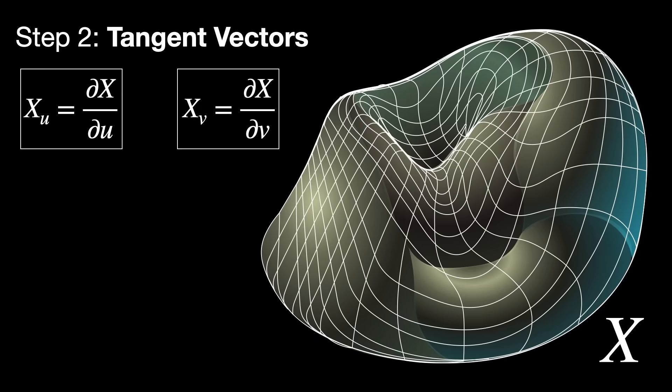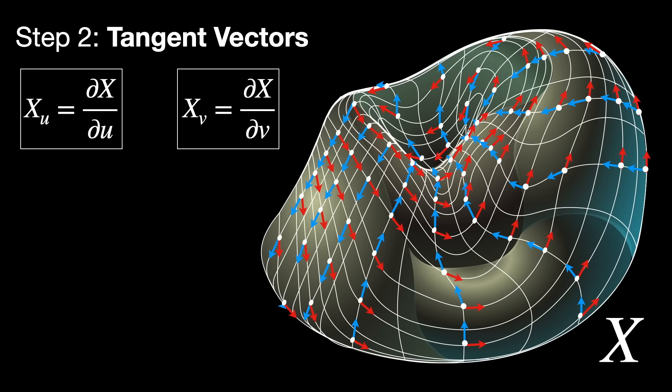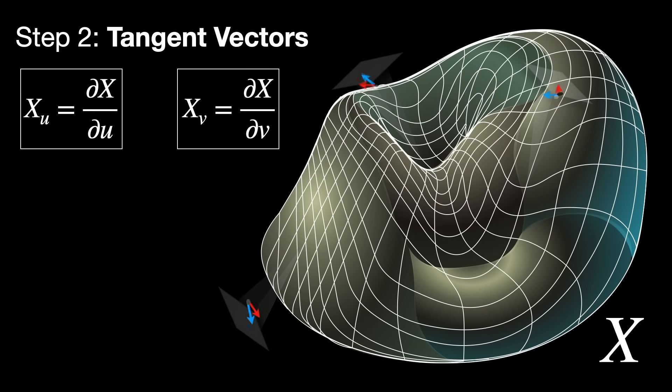Step 2. Tangent vectors. Compute the tangent vectors at each point by calculating the following partial derivatives. These vectors span the tangent plane at each point.